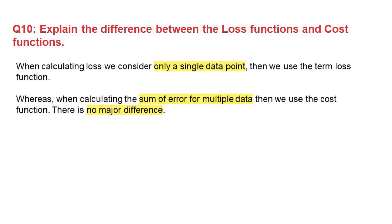Next question: what is the difference between loss function and cost function? When we calculate error for a single data point, we call it a loss function. When we use multiple data points, take the aggregate, and find the error, it is termed a cost function. Ideally, loss function and cost function represent the same concept — error — but the difference is the amount of data. For example, if you are using 1000 epochs, it will be a cost function, not a loss function.